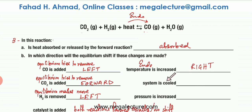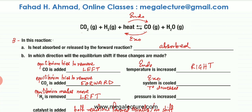The next part: the system is being cooled, meaning temperature decreases. Le Chatelier's principle states that the exothermic reaction would be favored. If the forward reaction is endothermic, the backward reaction is exothermic — in the backward direction, heat energy is produced. So the equilibrium shifts to the left-hand side, favoring the reactant side.